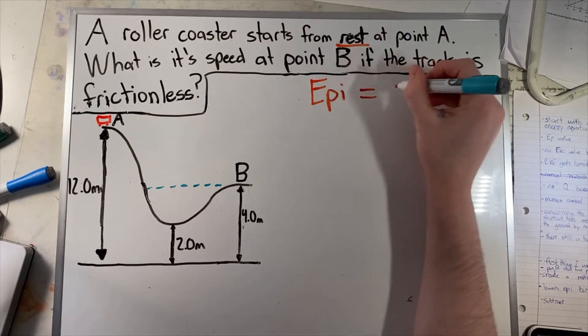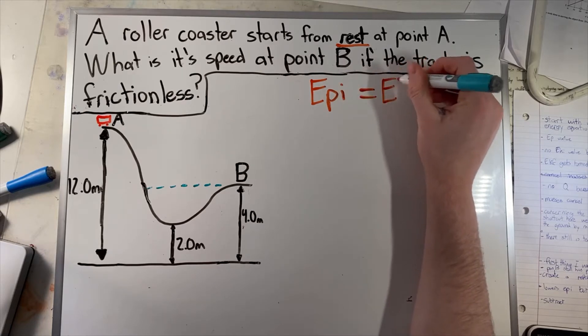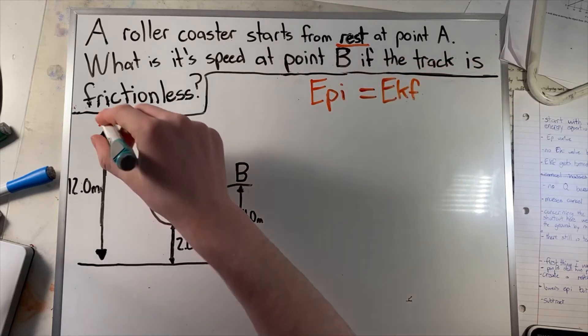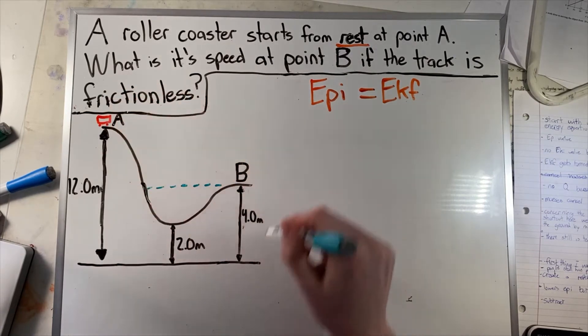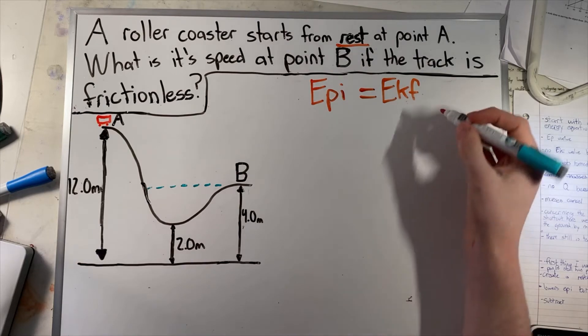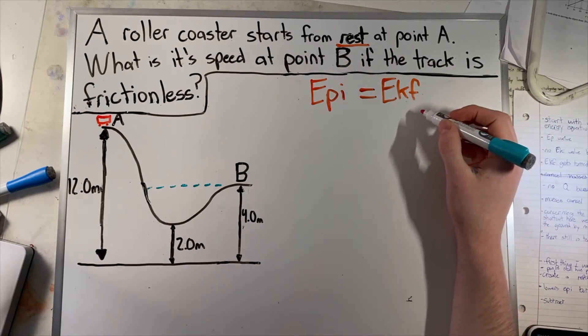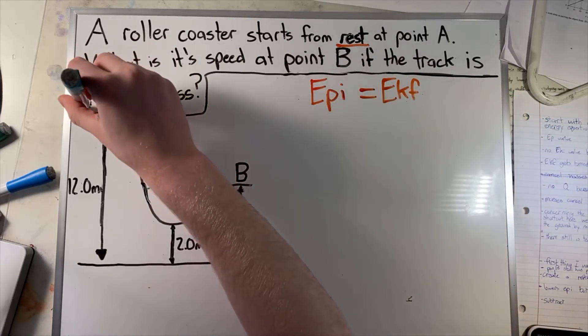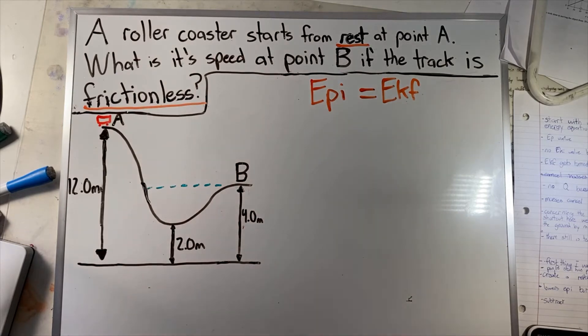So EPI turns into EKF, which is kinetic energy final, because as the cart goes down the track, its potential energy gets converted into kinetic energy. We can ignore thermal energy or friction because the question states the track is frictionless, so we can ignore Q.